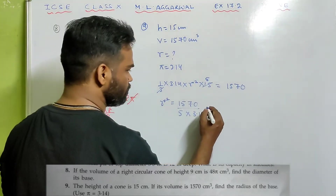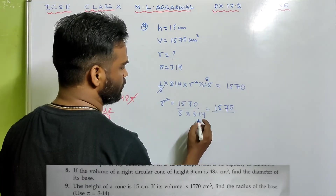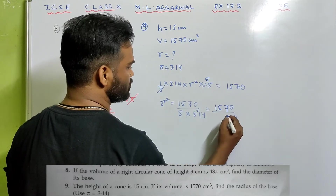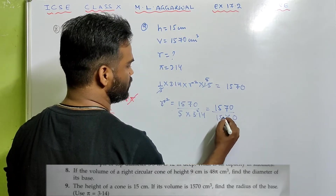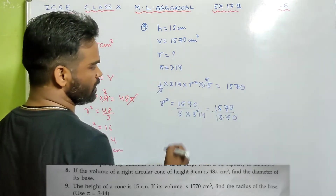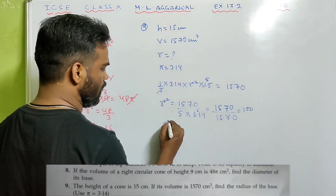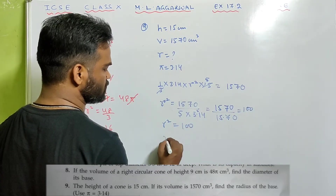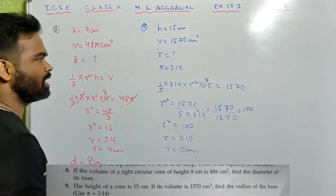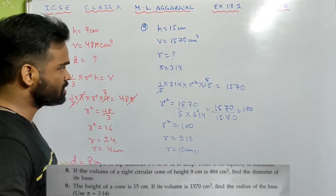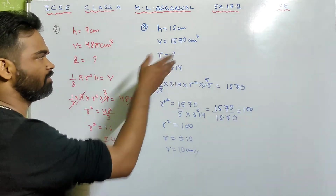1570 divided by 15.70 cancels to give 100. So r² = 100, which means r = ±10. Therefore r = 10 centimeter. That is the answer. Remember the formula for volume of a cone and equate it with the given volume.